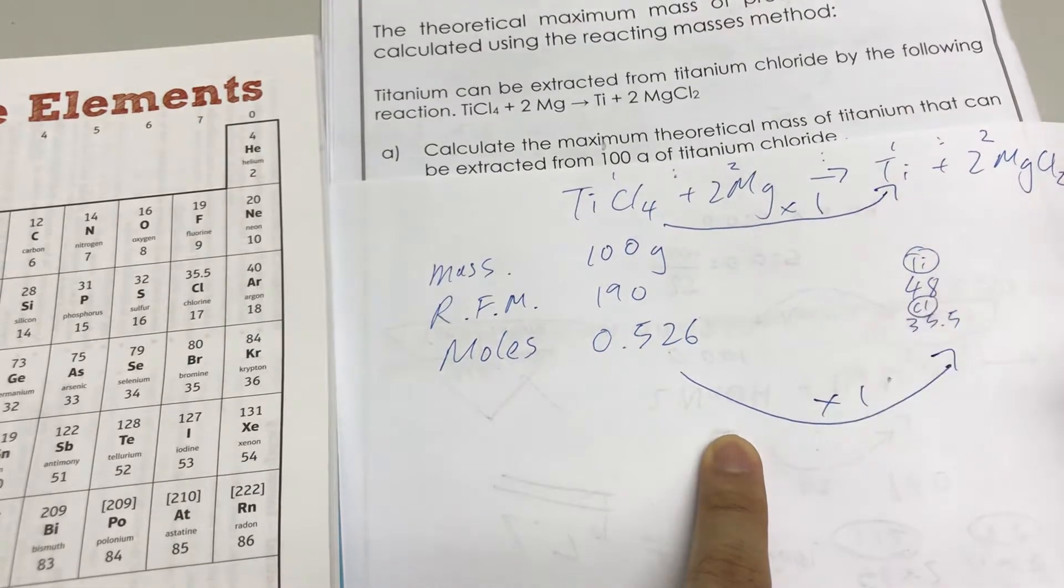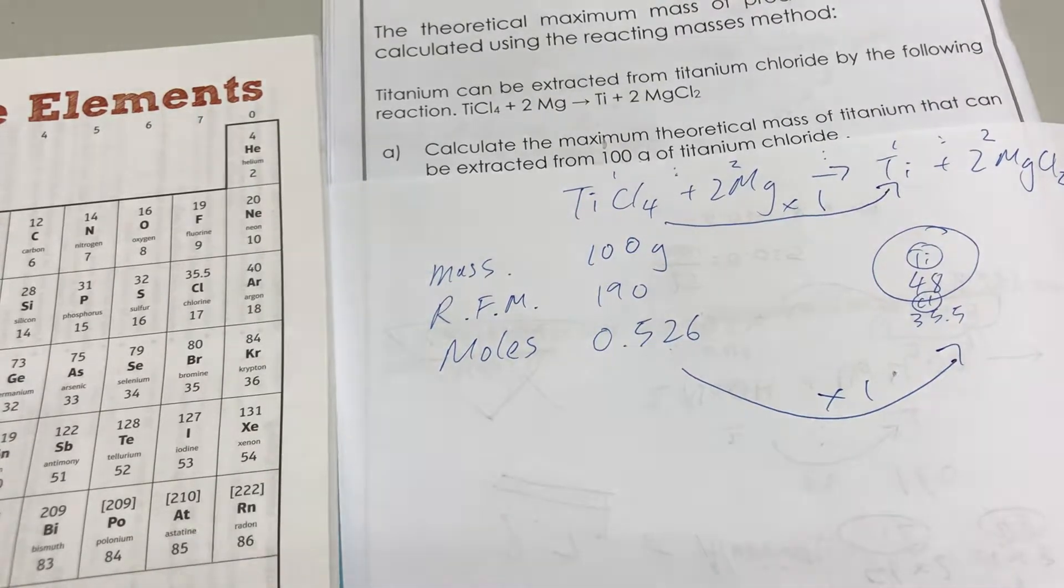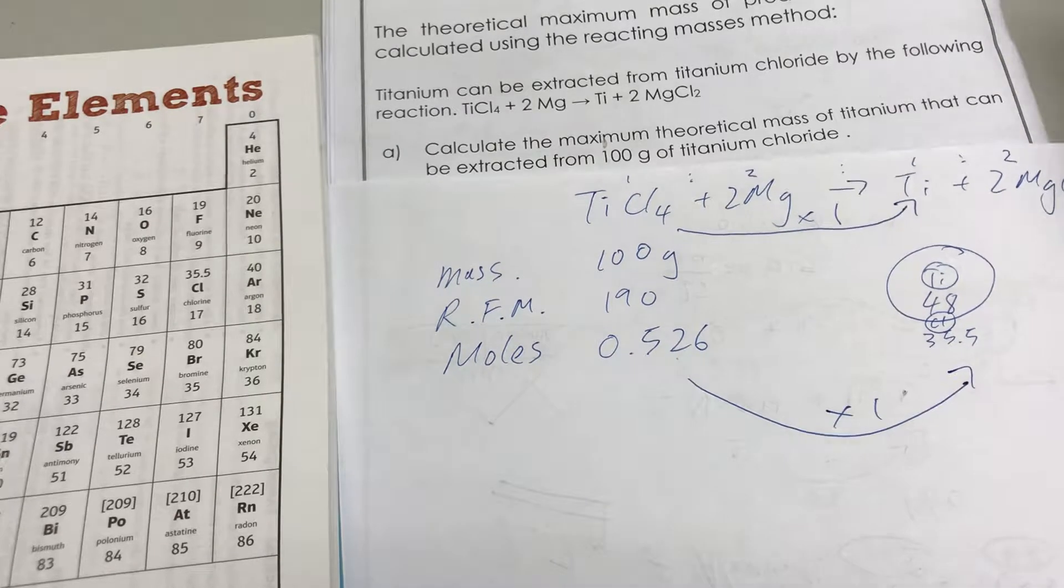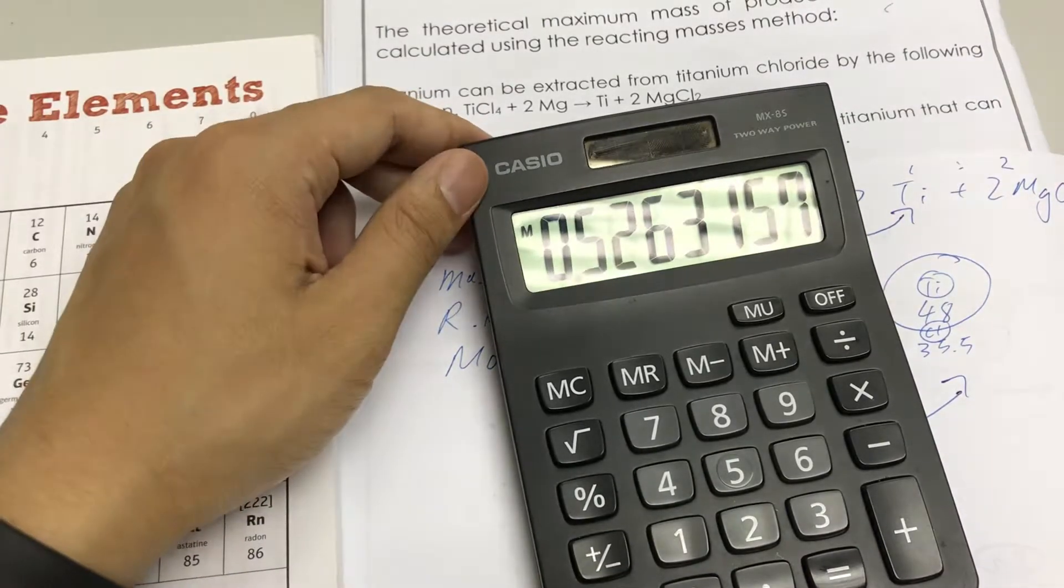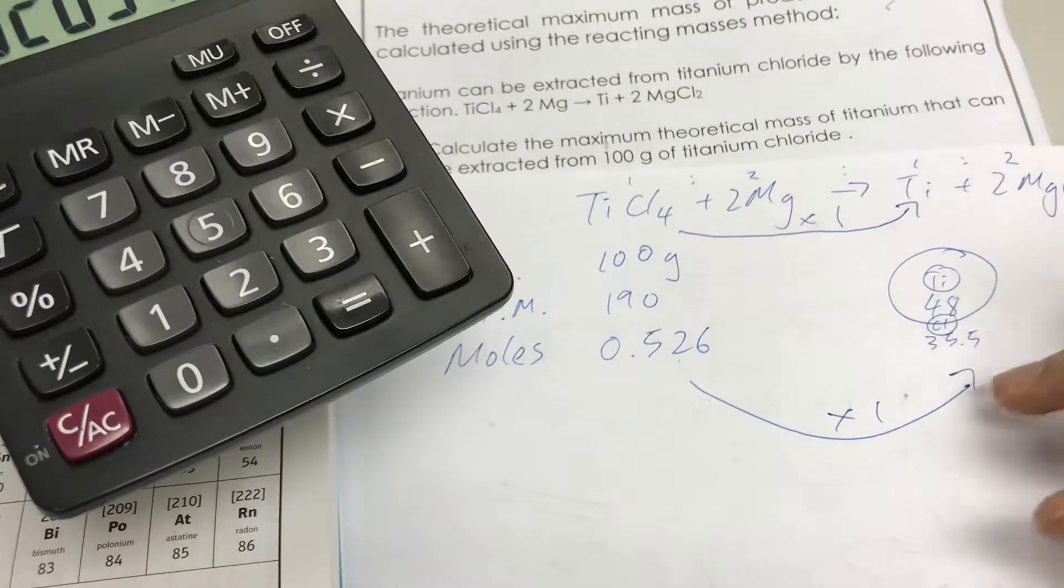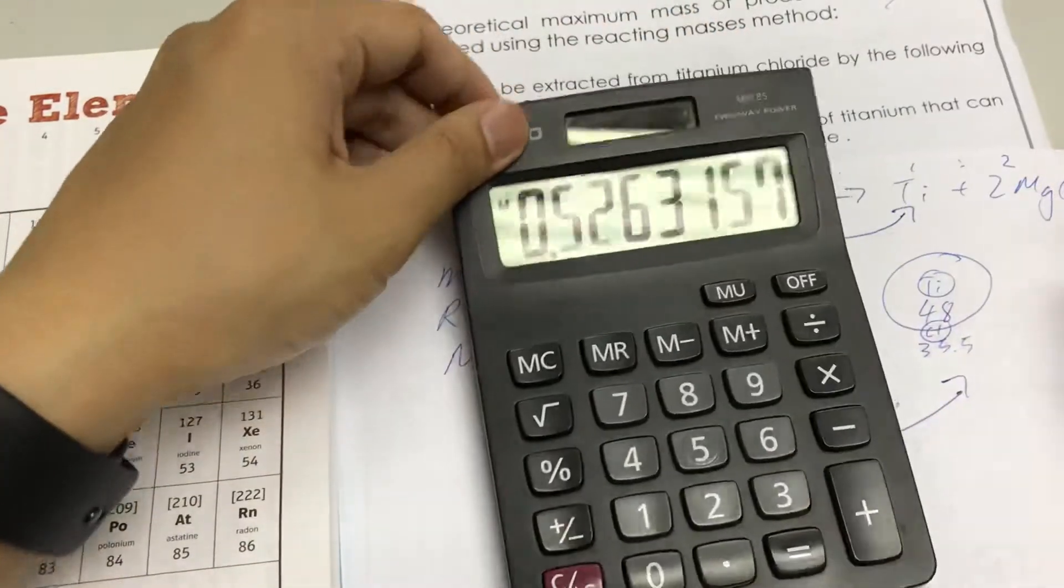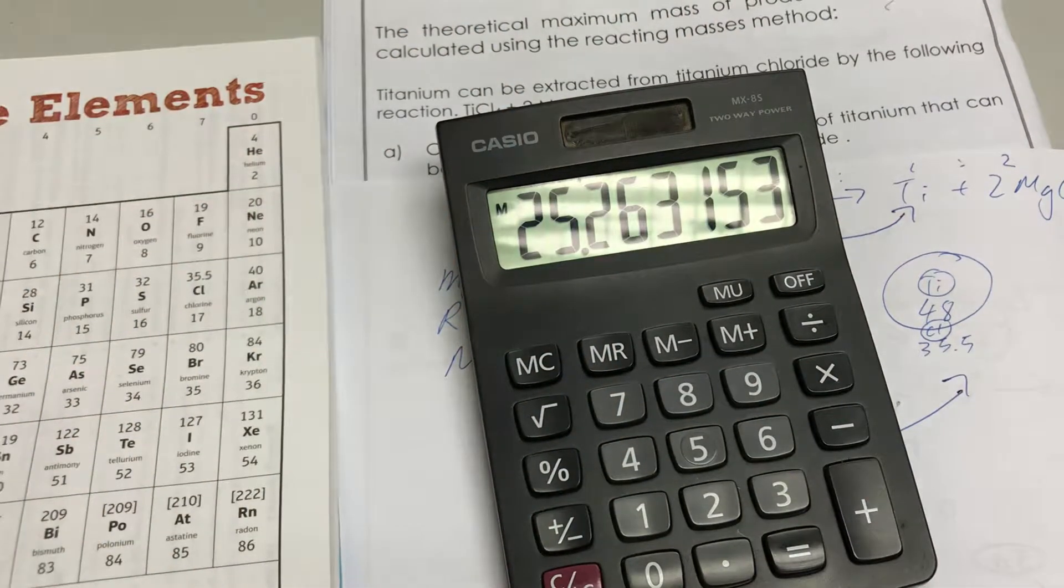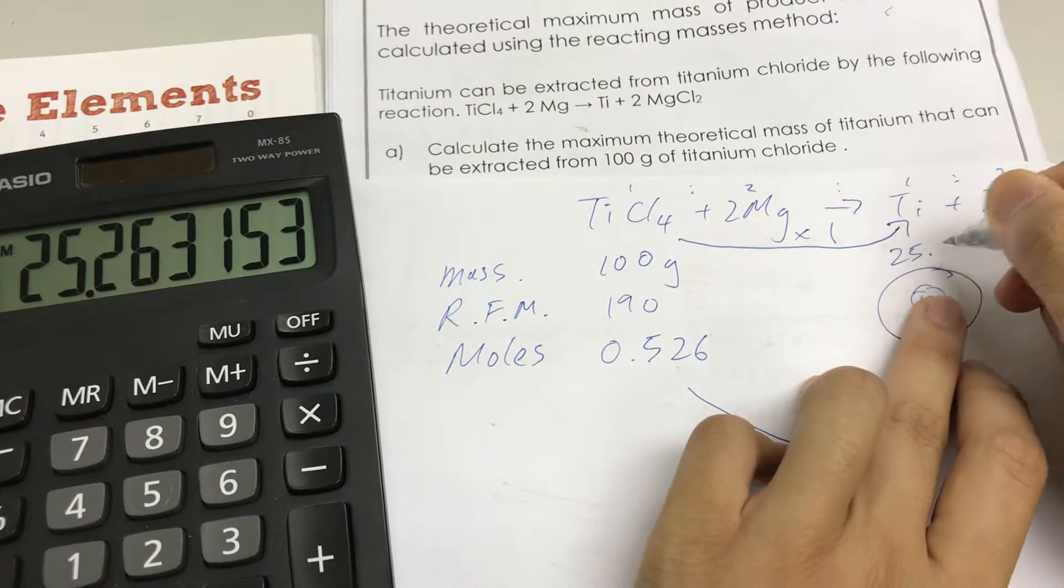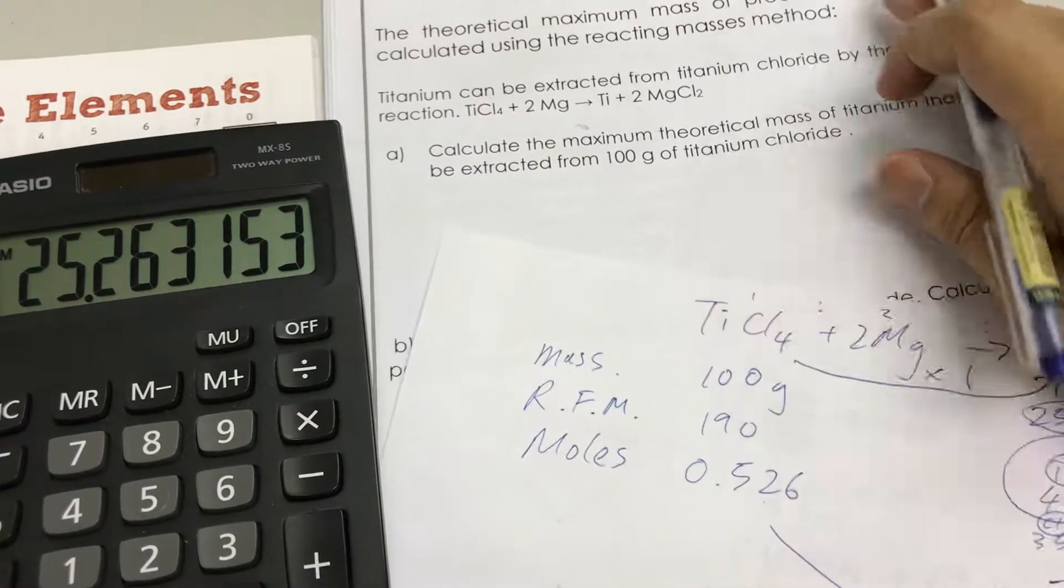We already have the molar mass of titanium. All you have to do now is take the amount of moles and multiply by the molar mass. Moles times the molar mass will give you the mass, so this number times 48. You should end up having 25.3 grams of titanium. This will be your answer to part a.